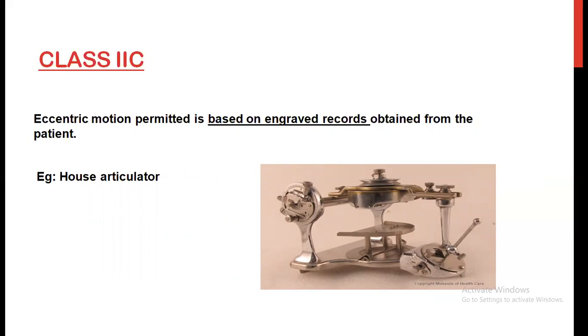Class 2C: eccentric motion is permitted based on engraved records obtained from the patient. An example of a class 2C articulator is the House articulator.